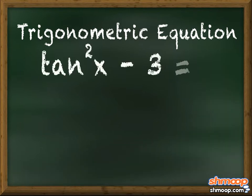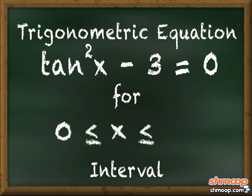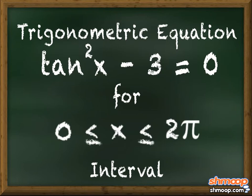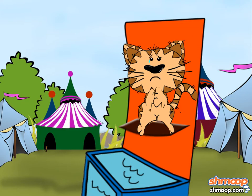Tangent squared of x minus 3 equals zero for the interval zero is less than or equal to x is less than or equal to 2π. As fate would have it, Speedy, the slowest dog in town, is in line to try to solve her question. She feels as if she may be Kool-Aid bound for sure.